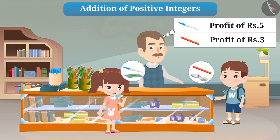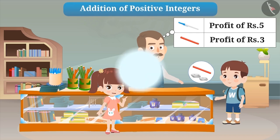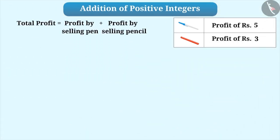Let's start with the addition of positive integers. Let us suppose a shopkeeper sold a pen and a pencil. He got a profit of Rs.5 on selling a pen and a profit of Rs.3 on selling a pencil. If we have to find the total profit, then we have to add the individual profits.